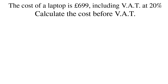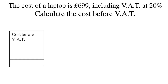Why is it wrong? If we look at our £699, we can see that it's made up of the cost of the computer before VAT, plus the VAT. We always represent the cost before as 100%. VAT is 20%, so the £699 represents 120% of the cost.